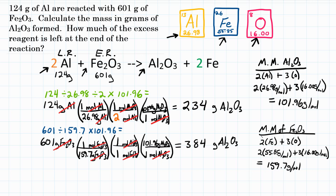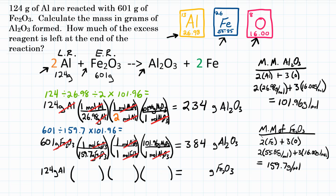The second part asks: how much of the excess reagent is left at the end? We take our 124 grams of Al — we know all of it will react because it's the limiting reactant — and convert it into grams of Fe₂O₃ using a three-step mass-to-mass calculation. We've already looked up all the molar masses. The first step: 26.98 grams of Al on the bottom, getting us to moles of Al. Grams of Al cancel.